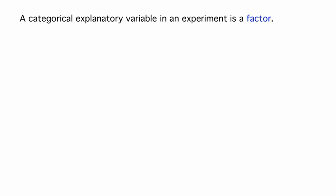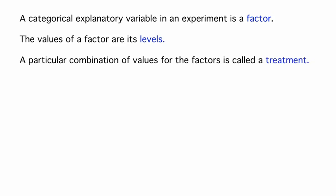The values of a factor that are studied in an experiment are its levels. In our HPV vaccine example, the factor is vaccination status, with levels yes or no. A particular combination of values for the factors is called a treatment. When there is only one factor, as in the HPV study, the treatments are the levels of the factor. But it's also possible that an investigator might want to simultaneously manipulate two explanatory variables.